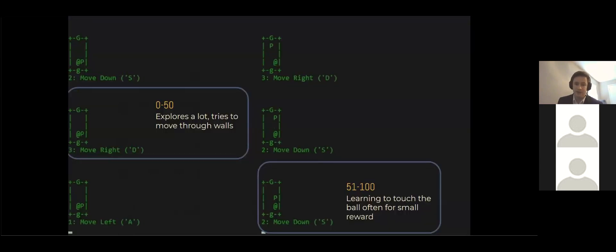We can see here in the first 50 games, the agent is mainly exploring the field at random and occasionally bumping into the ball. However, existence is painful with that minus one reward for movement so the agent quickly becomes friends with the ball to make things just a touch better.